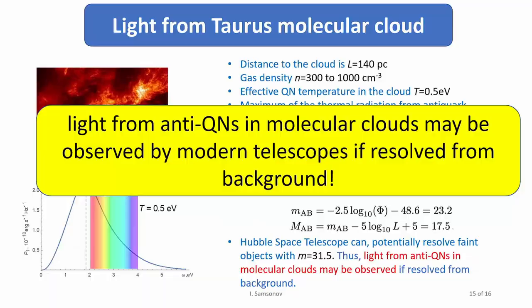Then we estimated the flux of photons here and compared this flux with the sensitivity of telescopes, like Hubble Space Telescope. We found that it is actually quite plausible. The light from anti-quark nuggets in molecular clouds may be actually observed by modern telescopes. The problem is how to resolve this light from the background. If it's resolved, then the sensitivity is enough to observe this light. It's a kind of prediction in this model.